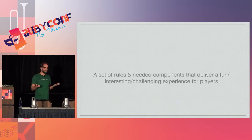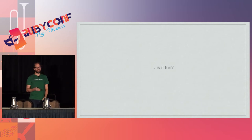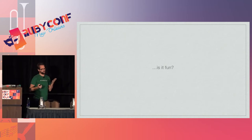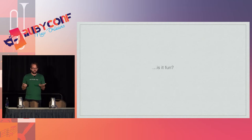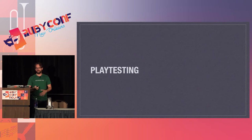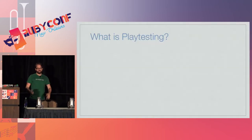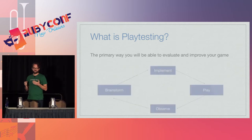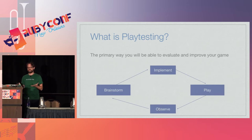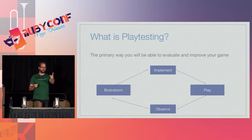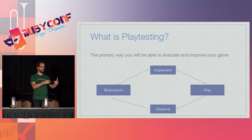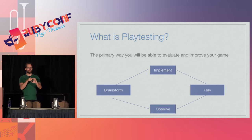So we've got rules, we've got components. Now we have to ask ourselves: is this fun? How do you know if the game is fun? The way that you find out is through playtesting — and that's really what I want to talk about today. Playtesting is the primary way you're going to evaluate and improve your game. It's a cycle: you have an idea, you implement it, you play it, you observe the results, you brainstorm how to make it better, and you keep going. The tighter the cycle, the better.